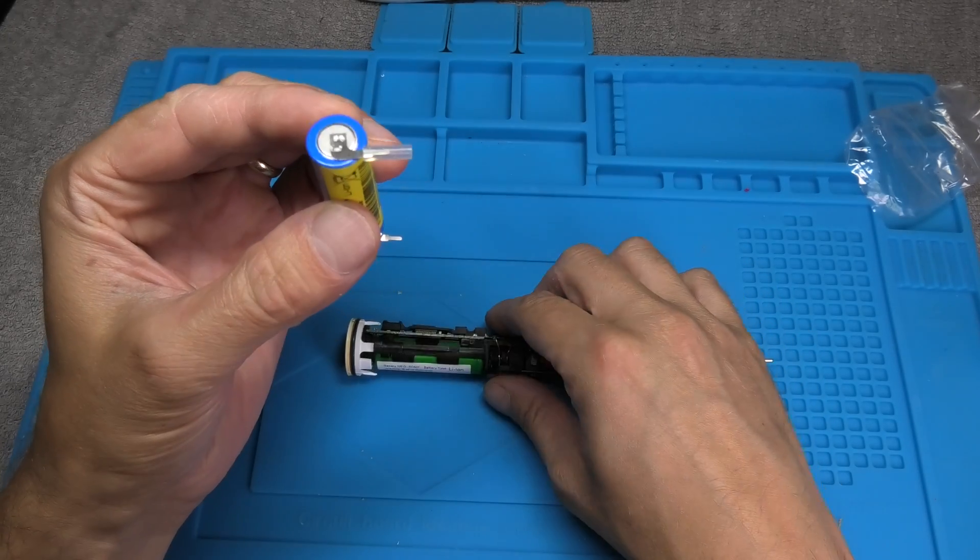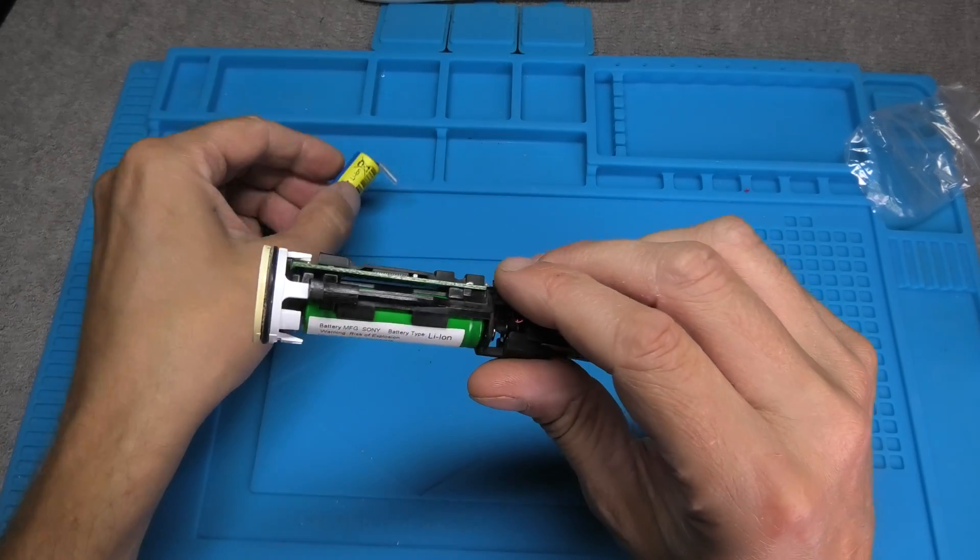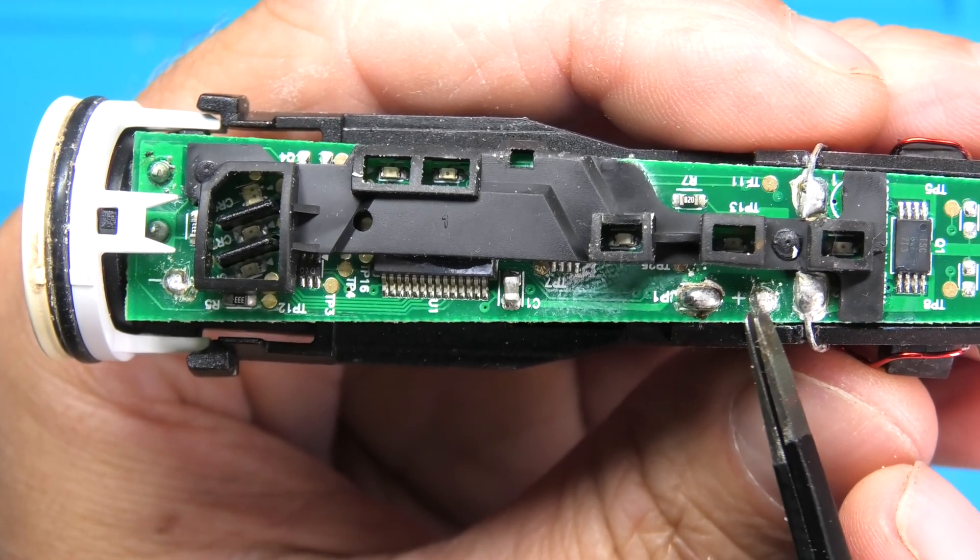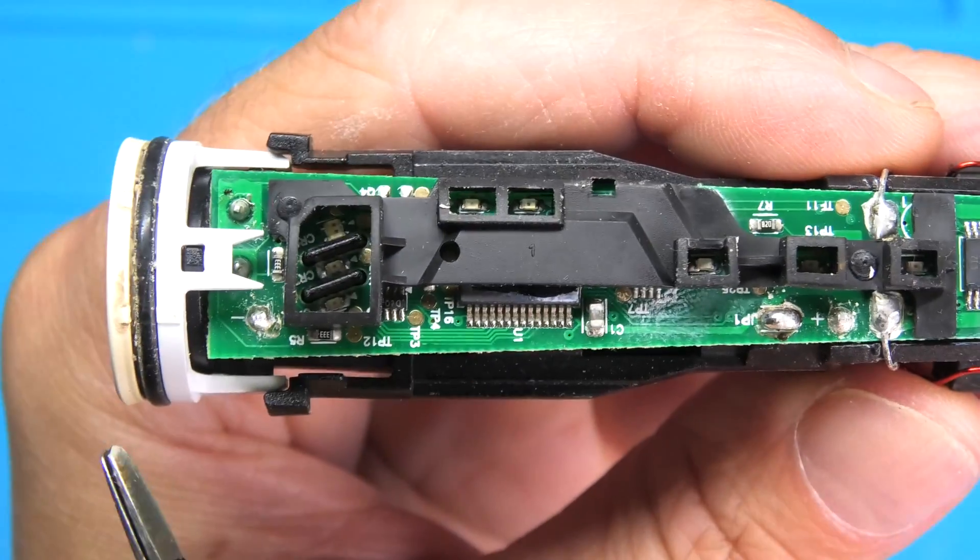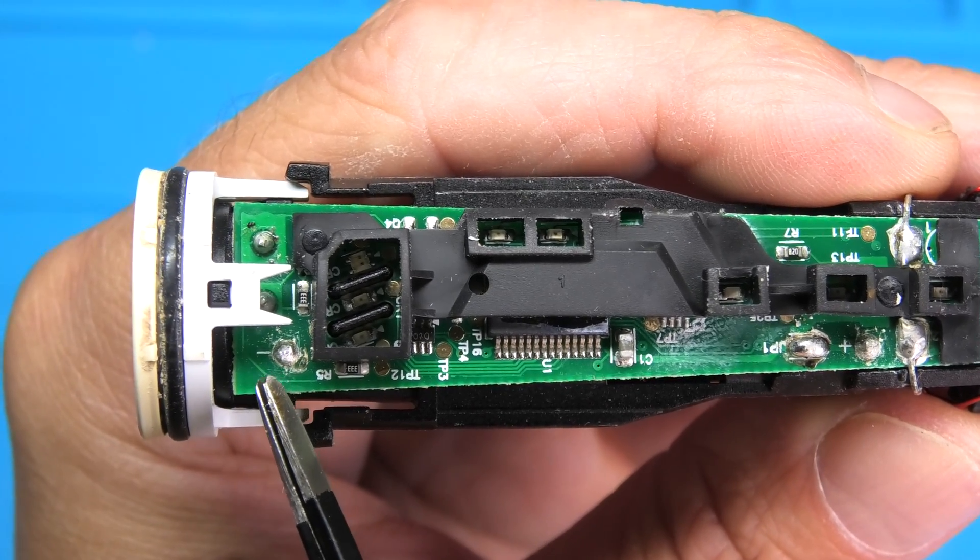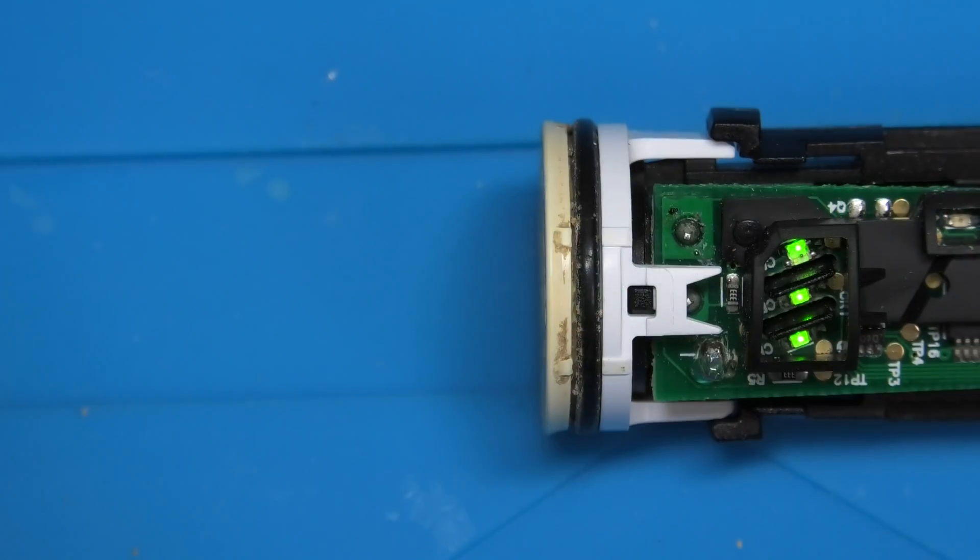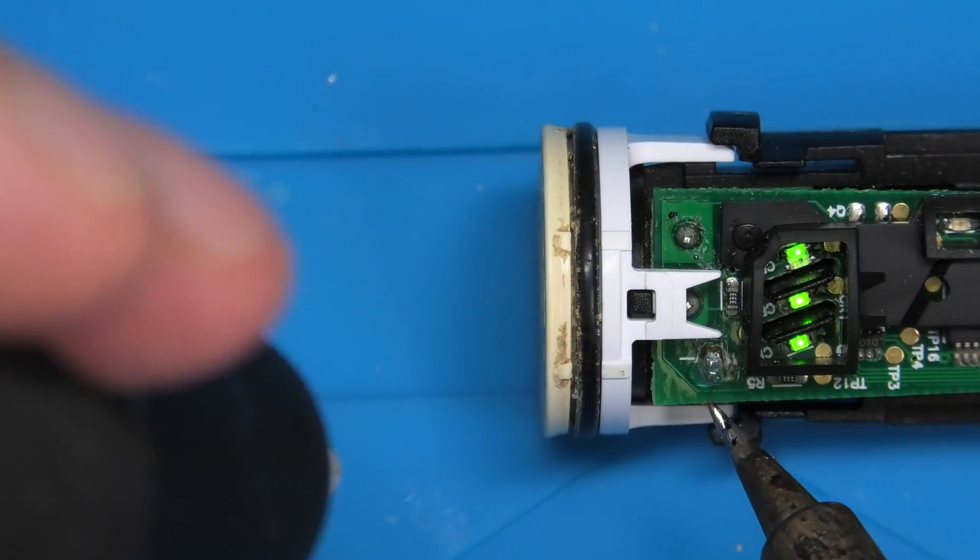You see here this has these tabs on the side already pre-installed, so those are important because the battery is actually soldered right onto the PCB. You see here on the board this plus symbol and the soldering point, and then here the minus with the soldering point.